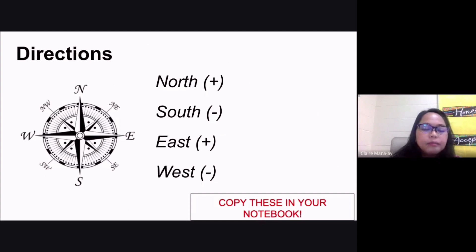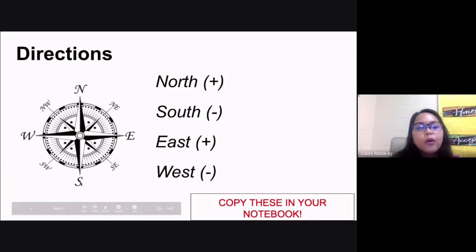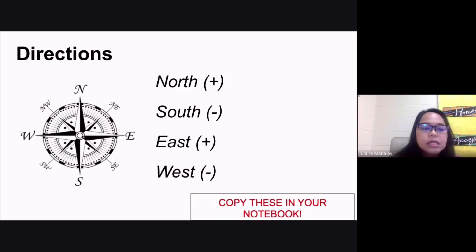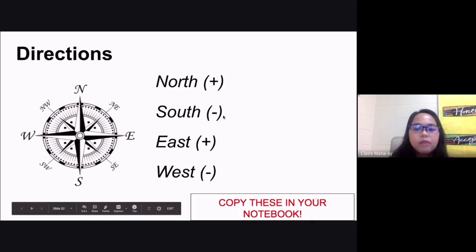Now before we go to examples, remember whenever you have a vector quantity, you need your directions. The four major directions are north, pointing upward; south, the opposite of north; west, going toward the left; and east, going toward the right. Whenever we solve for displacement, north and east use positive signs, while south and west use negative signs.